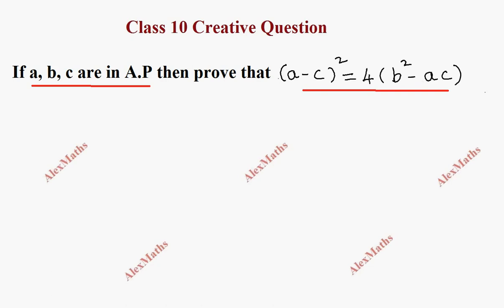Now, A, B, C are in AP. The second term minus the first term is equal to the third term minus the second term. It is the common difference.